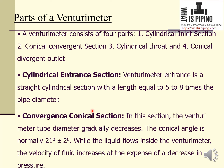The convergent conical section is where the venturimeter tube diameter gradually decreases. The conical angle is normally 21 degrees with a tolerance of plus or minus 2 degrees. As the liquid flows inside the venturimeter, the velocity of the fluid increases at the expense of a decrease in pressure.